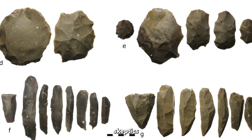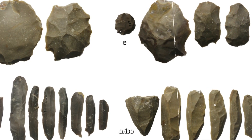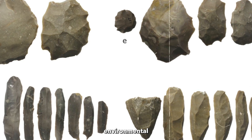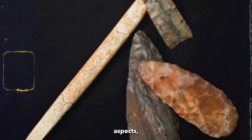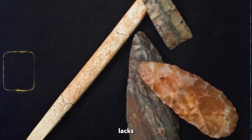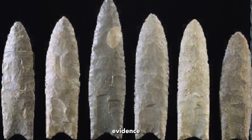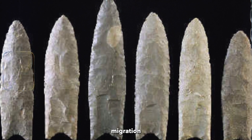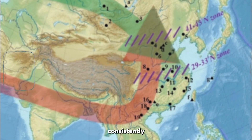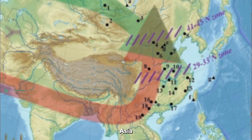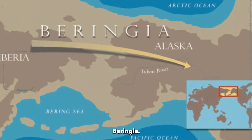However, skeptics point out that similar stone tool techniques and forms can also arise independently due to environmental challenges or functional requirements. Despite its intriguing aspects, the Solutrean hypothesis lacks substantial genetic, archaeological, and linguistic evidence to support the direct transatlantic migration of Solutrean populations. Genetic studies consistently show connections with East Asia, supporting the prevailing theory of migration from Siberia across Beringia.